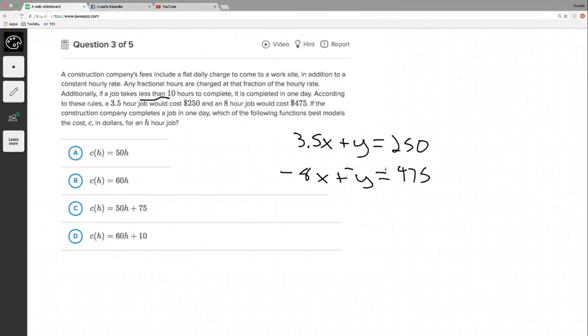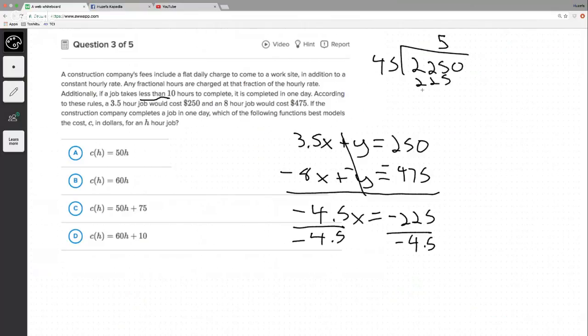Then I'm going to make this whole guy negative, we've got negative 4.5x, these guys cancel out, equals negative 225, then we divide this by 4.5, negative 4.5, and we get, I'll do it up here, 225 divided by 45, 2, 3, 4, 5, 2, 2, 5, 0.